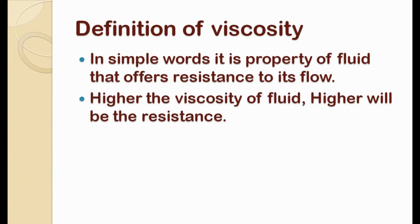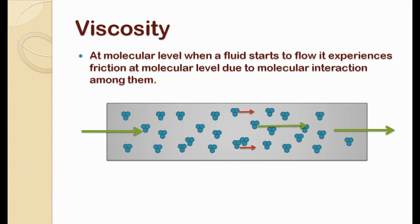If we see the molecular structure of fluid flowing through a tube, we can see that fluid flows in the form of layers. The layers of fluid at the center of the tube have more velocity than the layers close to the inner surface of the tube. Due to this difference in velocities, the layers with low velocity offer resistance to the flow of layers with high velocity. If the intermolecular resistance is very high, the overall speed of fluid flow decreases.